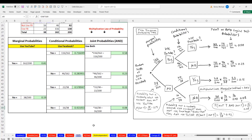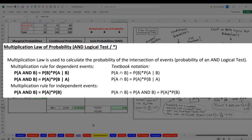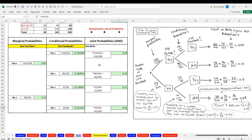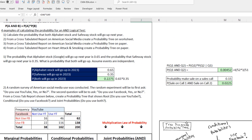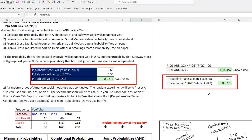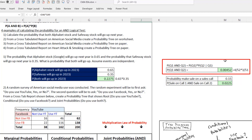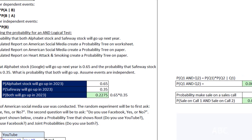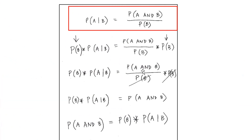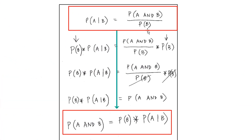In this video, we talked about the multiplication law of probability. We saw how to create a probability tree, examples of using the multiplication rule on both independent and dependent events, and we saw that the conditional probability rule is really the multiplication rule in disguise. Next video, we'll use lots of multiplying and conditional probabilities with a probability tree to talk about Bayes' theorem.